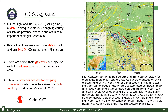The Changlin earthquake occurred on June 17, 2019. Before this, there were also one MS 5.7 and one MS 5.3 earthquakes in the area. Later we call them P1 and P2.